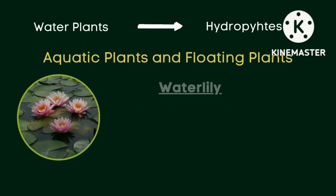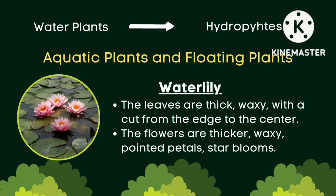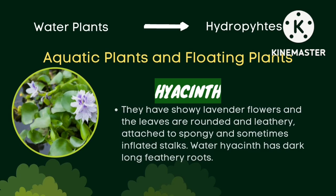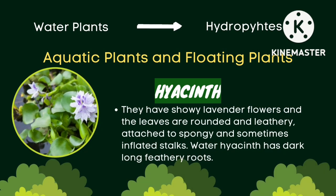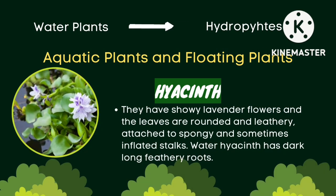The leaves of water lily are thick and waxy, with a cut from the edge to the center. The flowers are thicker, waxy, with pointed petals and star blooms. Hyacinths have showy lavender flowers and the leaves are rounded and leathery, attached to spongy and sometimes inflated stalks. Water hyacinths have dark, long feathery roots.